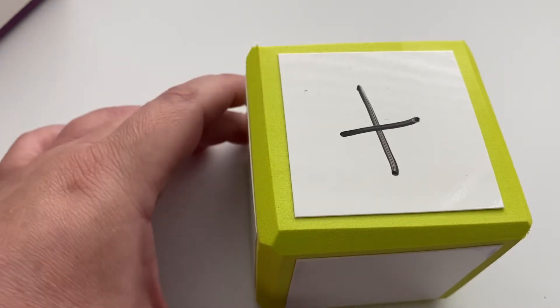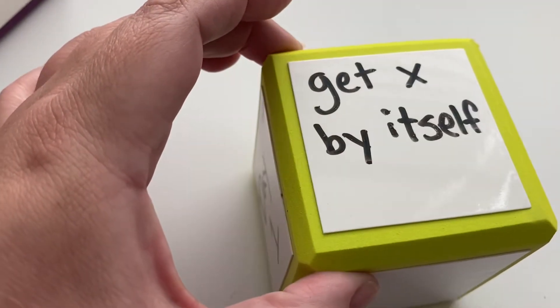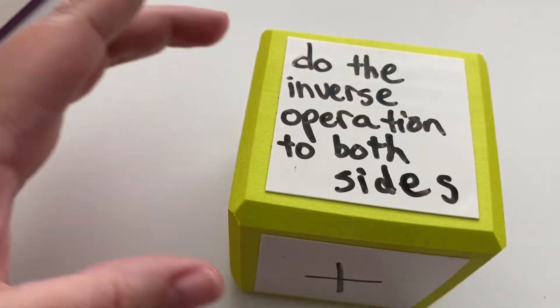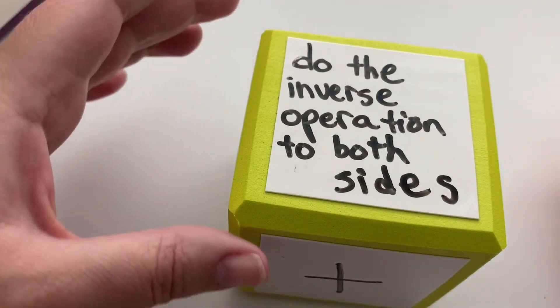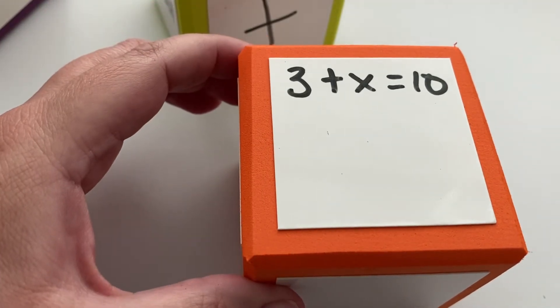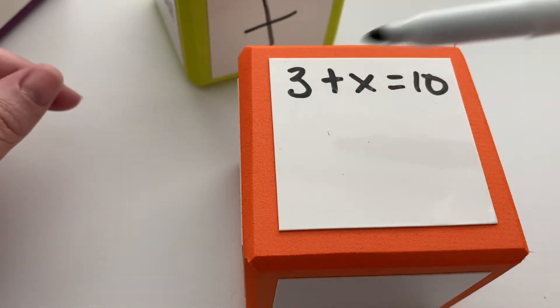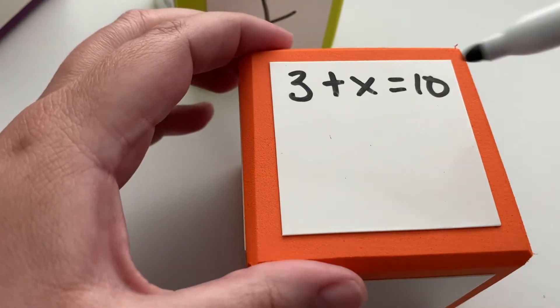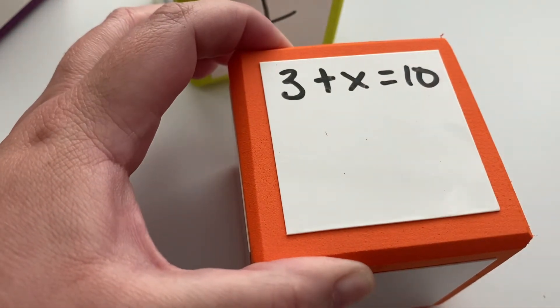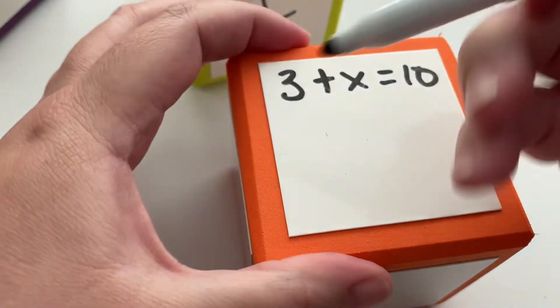So let's look at some examples. Remember we're trying to get x by itself and we do that by doing the inverse operation to both sides. So 3 plus x is equal to 10. This side is equal to this side. So the inverse operation we would do would be the one with the 3. It's a positive 3, so we would call it a plus 3.